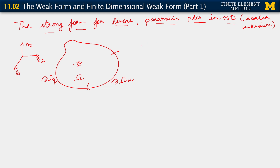This is the setting. We are given data: UG, JN, F. We have our constitutive relation for these problems in 3D as well, which is that J_i equals minus kappa_ij u comma j.